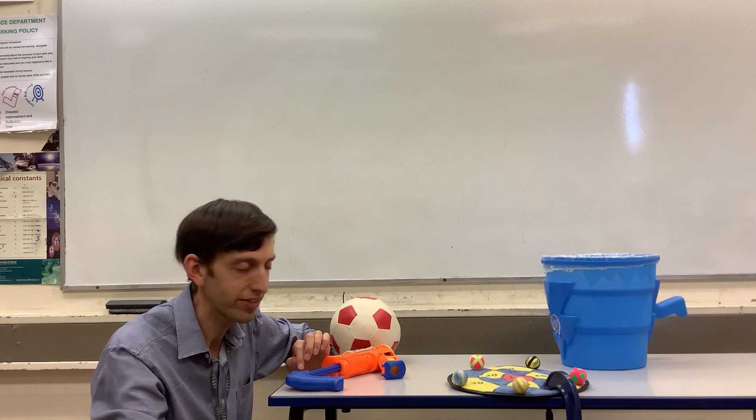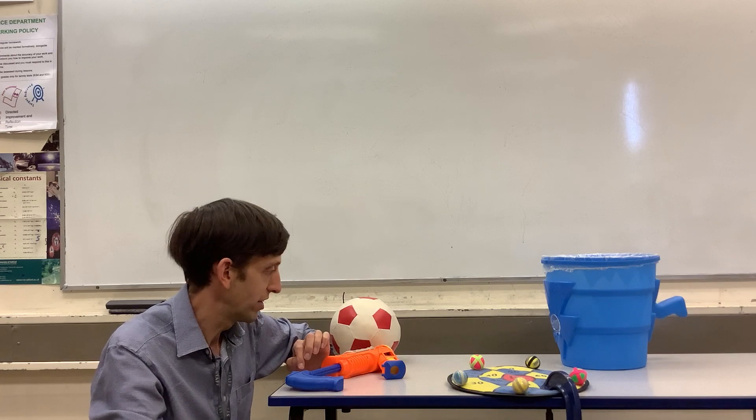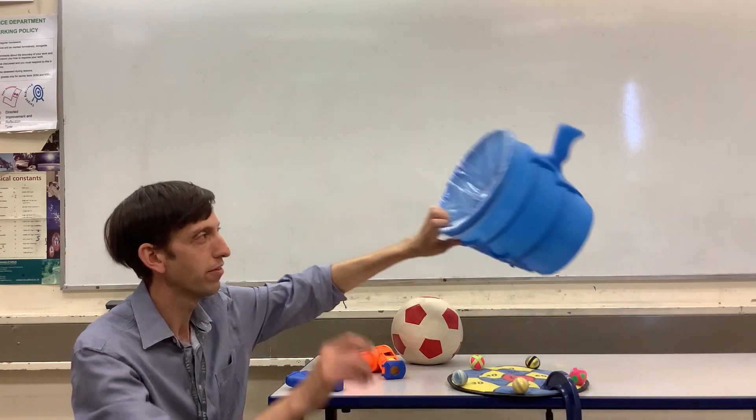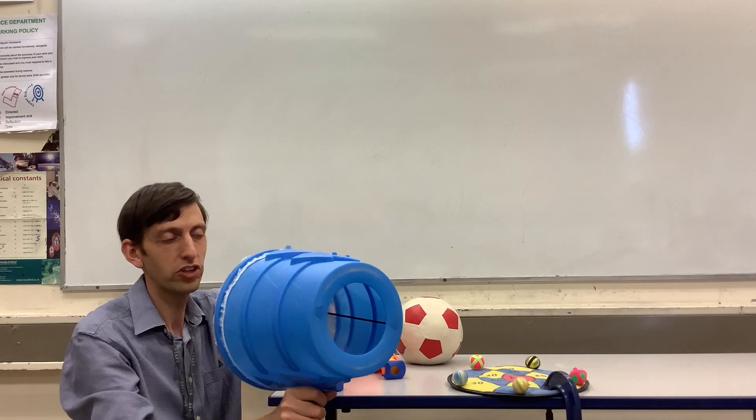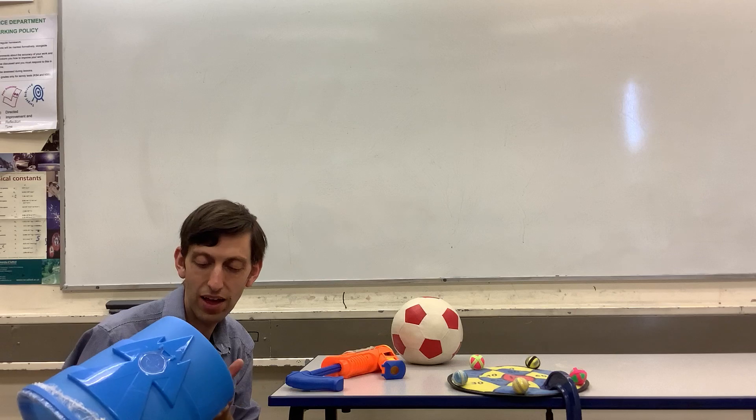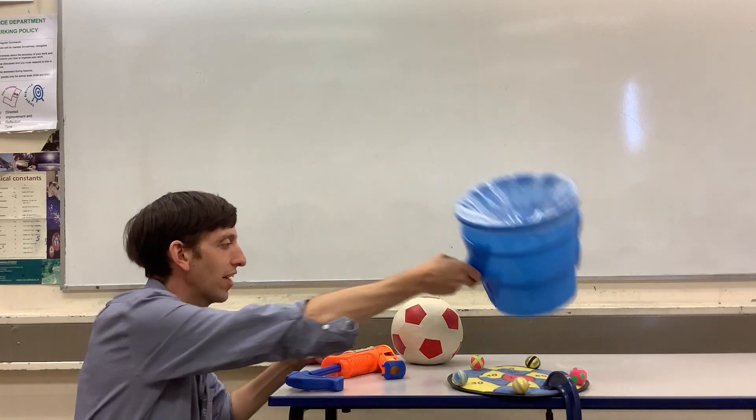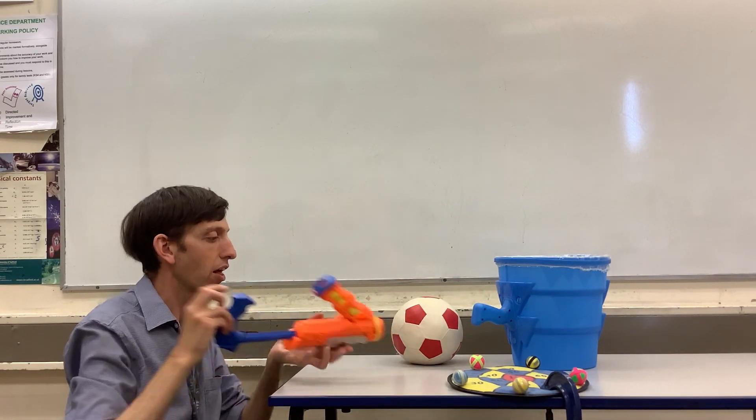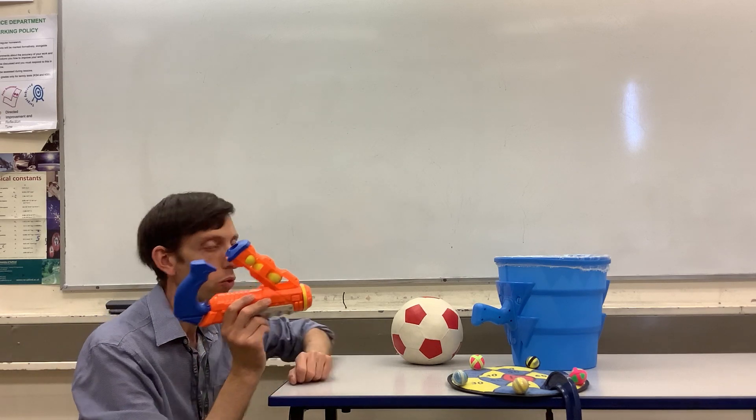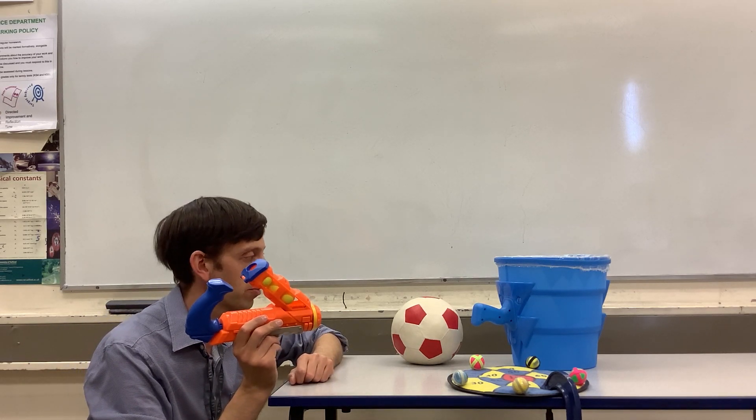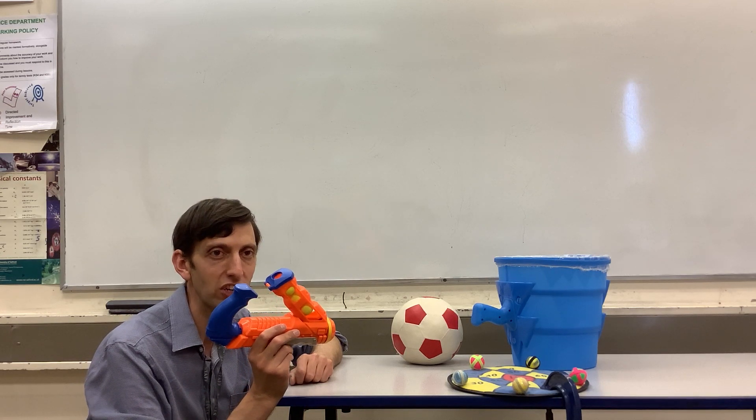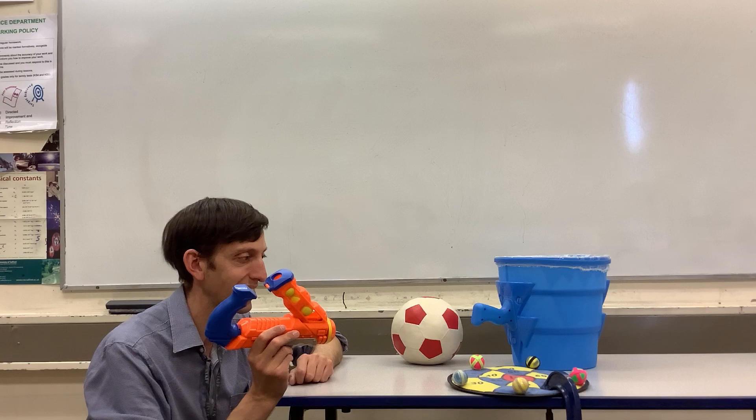And I have three things to represent the nuclear radiation. I have a football, I have an air zooka which fires air vortexes, and I have this little gun that fires these yellow balls. So which of these do you think represents alpha radiation, which do you think represents beta radiation, and which do you think represents gamma radiation?